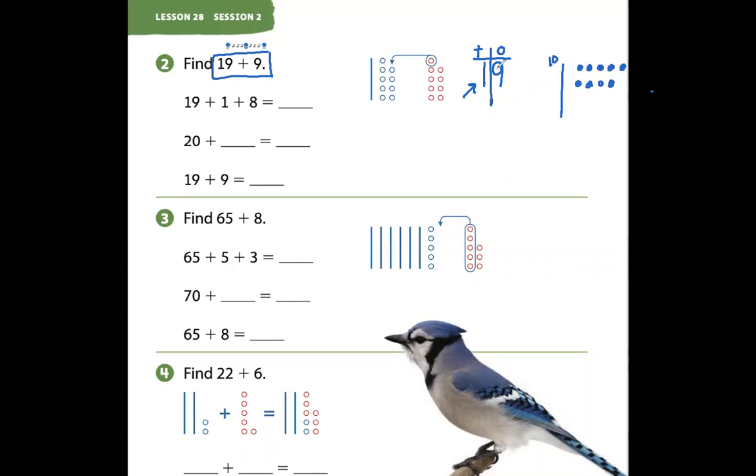One ten and nine ones. We have that evidence, but we're adding another 9. But when I'm looking at this down here, it doesn't show me 9. It shows me a 1 and an 8. I wonder why it says a 1 and an 8.